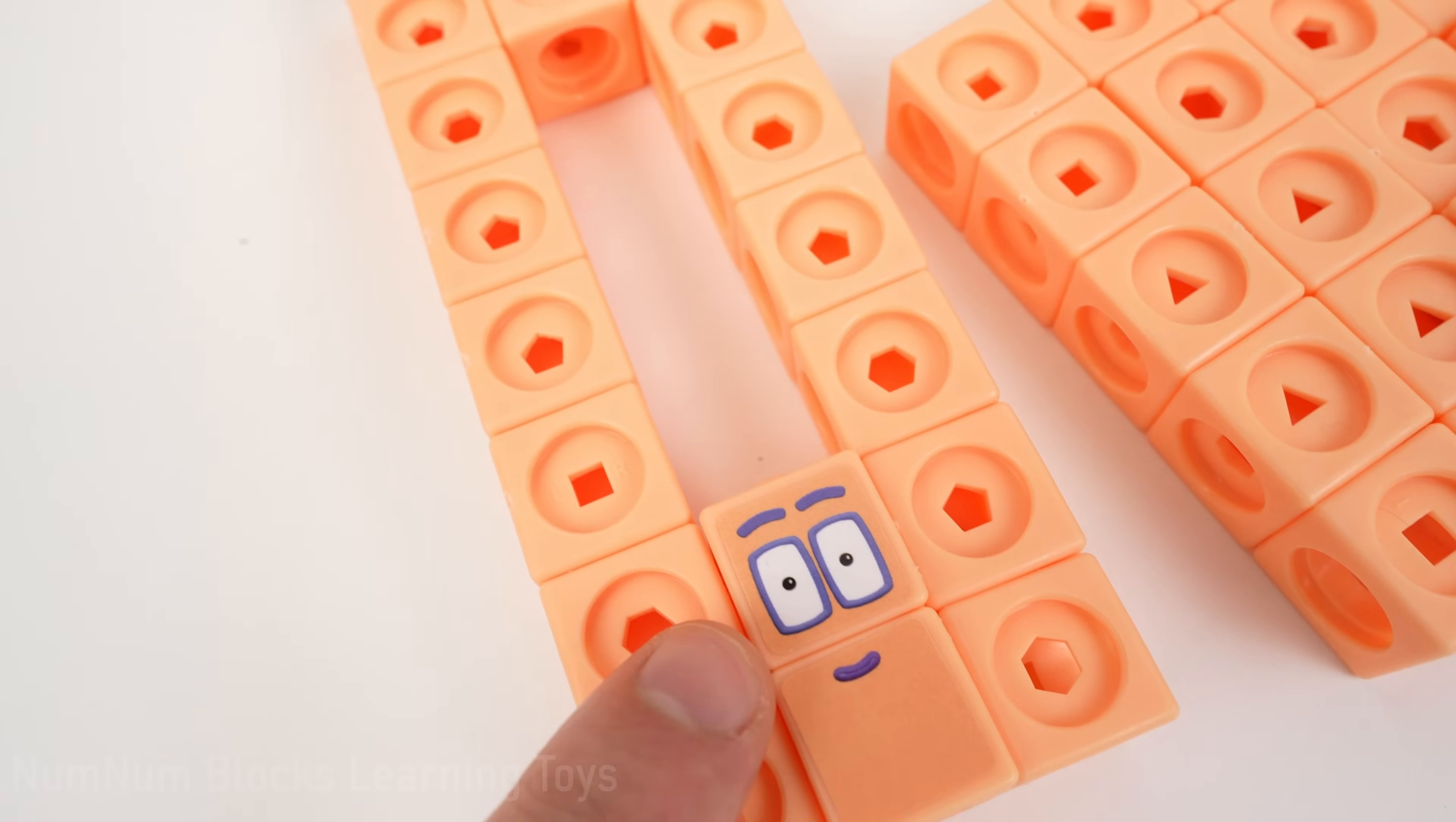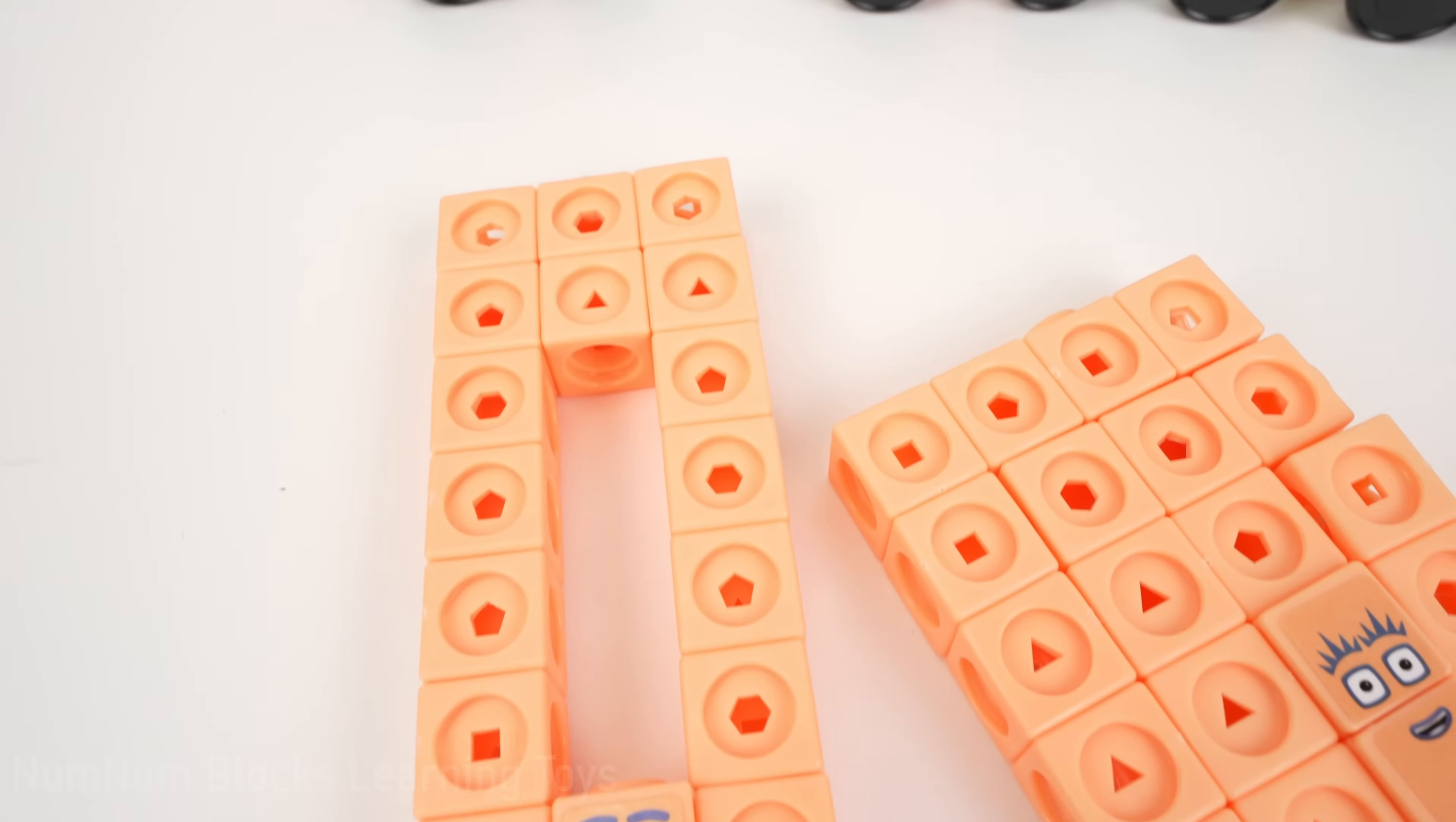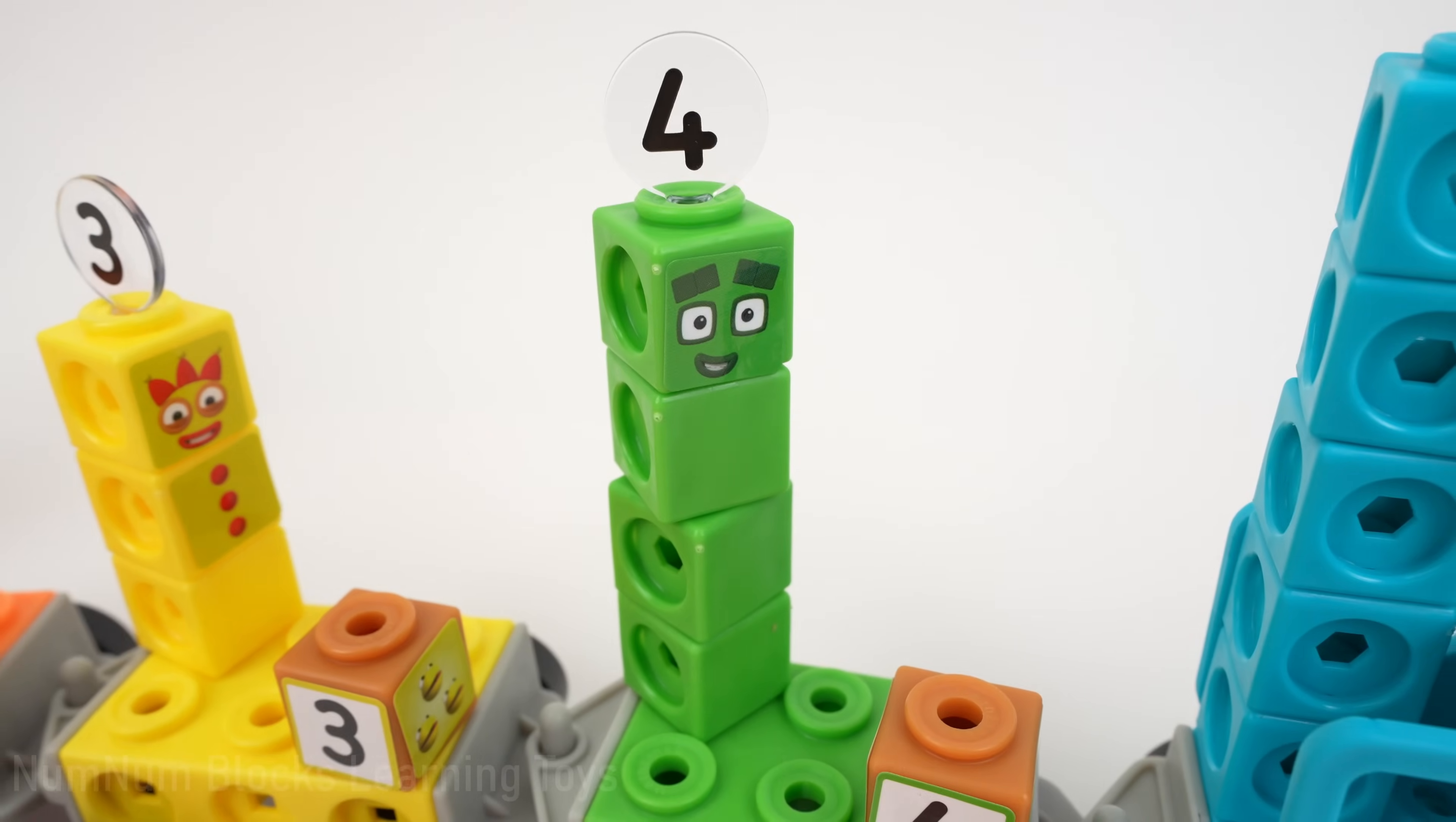Let's measure the size of the hole. One, two, three, four. This number block is missing four pieces. Let's find our friend four. What color is four? Green. Here's number four.